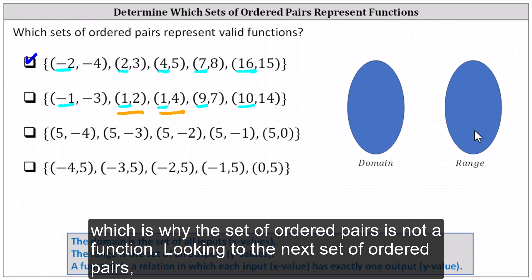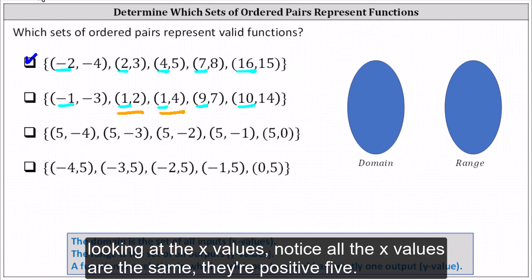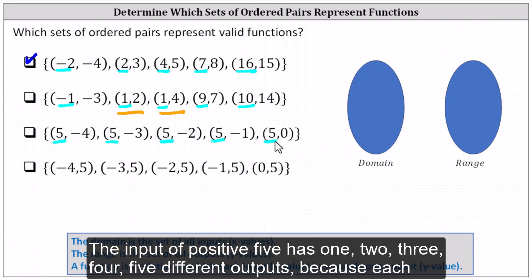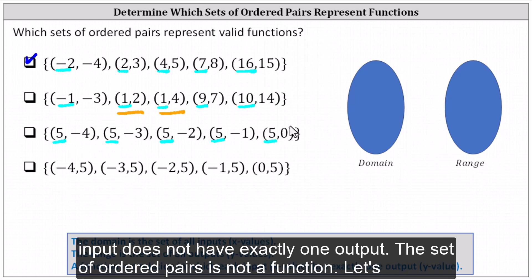Looking at the next set of ordered pairs and focusing on the x values, notice all the x values are the same — they're positive five. The input of positive five has five different outputs. Because each input does not have exactly one output, the set of ordered pairs is not a function.